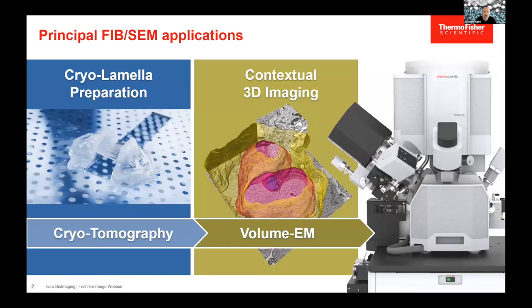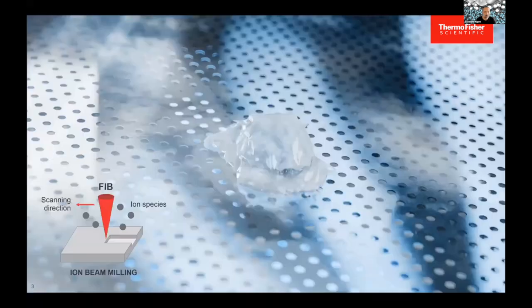Let's start with the principal FIB-SEM applications that we have and support with our dual beam or FIB-SEM microscopes. One big area is cryo-tomography sample preparation — everything where we try to thin down samples for electron tomography. Cryo-EM sample preparation means preparing lamella samples from vitriously frozen samples. There's also a second block that became more popular in recent years: volume EM, or contextual imaging, not at the high resolution offered by tomography but at a larger field of view, allowing imaging of more context. In tomography, the main goal is to use the system's ion beam to thin down a sample for transmission electron microscopy.